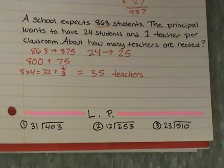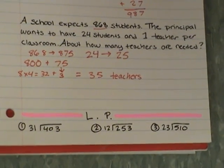And here's your lesson practice. 403 divided by 31, 253 divided by 12, and 510 divided by 23.